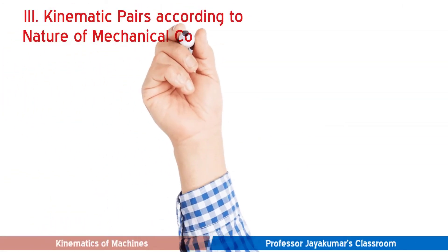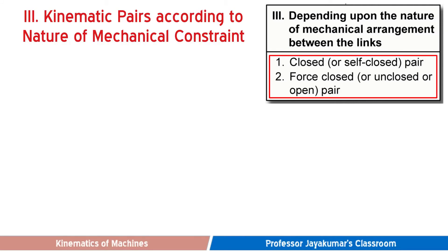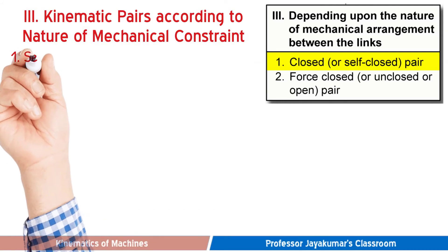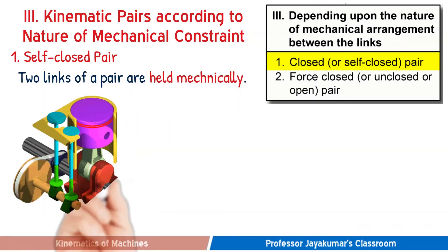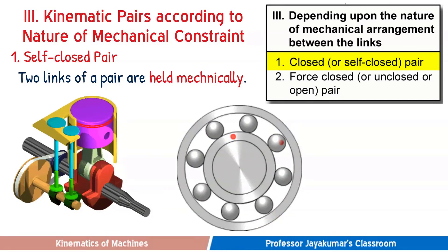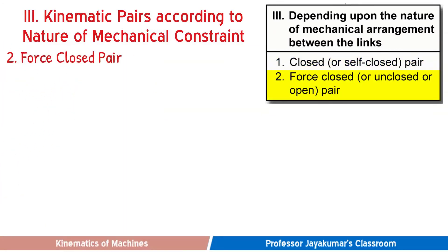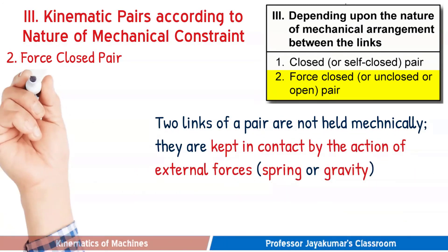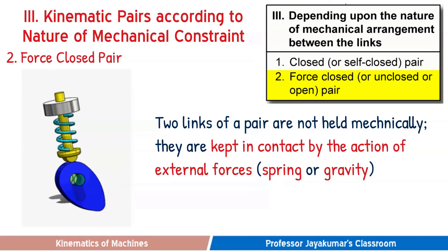Finally, kinematic pairs can also be classified depending upon mechanical arrangements for constraining motion as self-closed pair or force-closed pair. In a self-closed pair, two links are held together mechanically — piston and cylinder arrangements are held mechanically, as are ball bearings. In a force-closed pair, two links are not held together mechanically; instead, they are kept in contact by the action of external forces such as a spring or gravity. The cam and follower arrangement shown uses a spring to keep the links together.